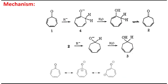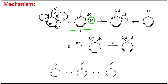Before going into the details, you should understand the mechanism. The hydride first attacks at a specific position — it comes in, and the ring opens, ultimately producing the first reduction product. The incoming hydride gives what is actually an enolate.